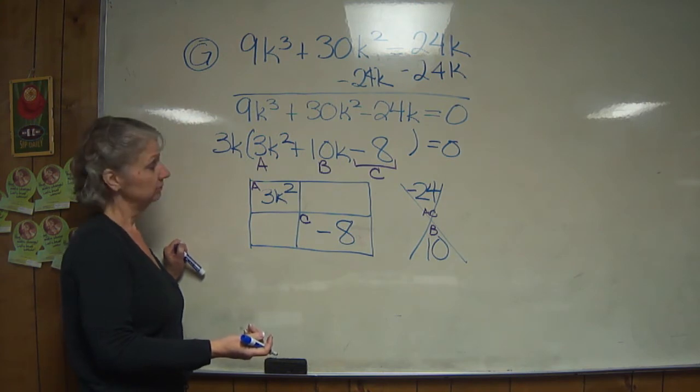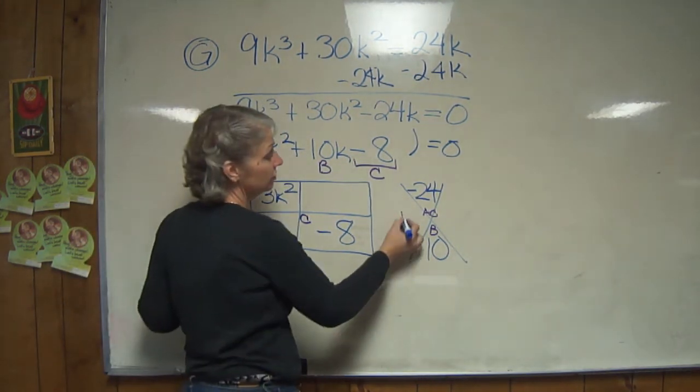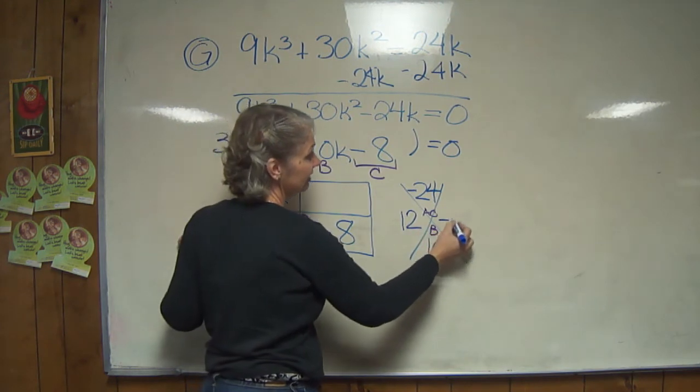Negative 6 and negative 4? Negative 6 and negative 4? How about 12 and 2? Yeah, 12 and negative 2.